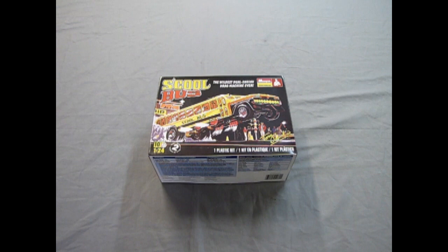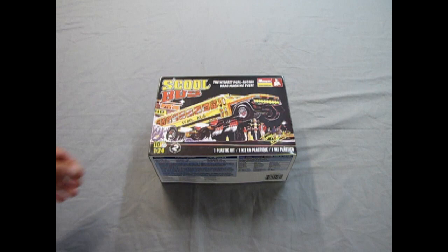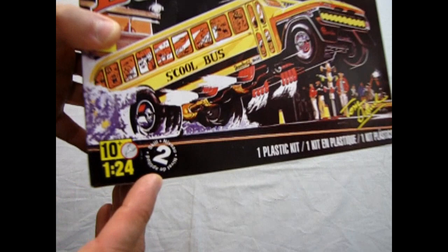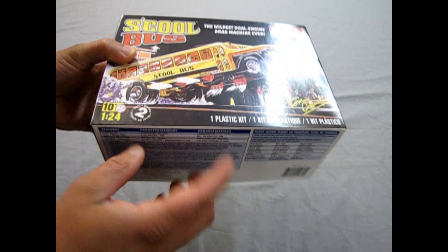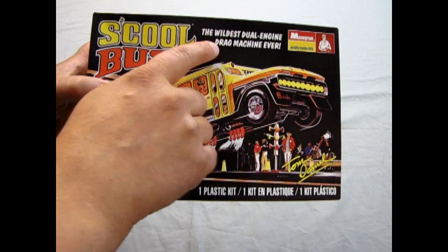Let's see what's in the Tom Daniels school bus. This is a 1/24th scale kit, skill level 2 for ages 10 and up, that needs glue and paint to make it all work out. You get one plastic kit inside and this is crazy - it is the wildest dual engine drag machine ever.